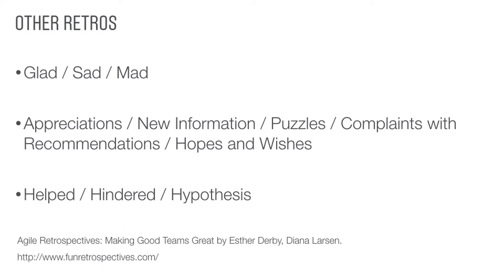Glad, sad, mad is not the only type of retrospective you can run. Other types include: appreciations, where you give praise to each other; puzzles, for things you're not sure what to do with but might want to act on; complaints with recommendations, which are the action items you'd like to see; hopes and wishes, like future dreams for the team; and help, hindered, hypothesis — things that helped the team, hindered the team, and things you want to try. For more types, I recommend the book Agile Retrospectives and also funretrospectives.com.